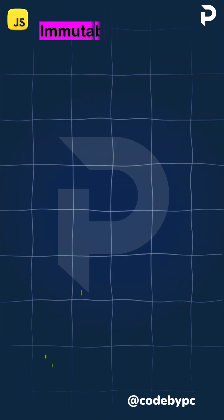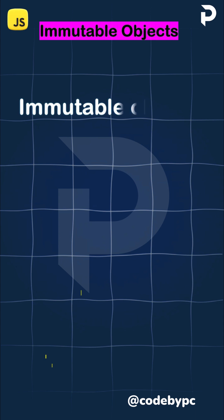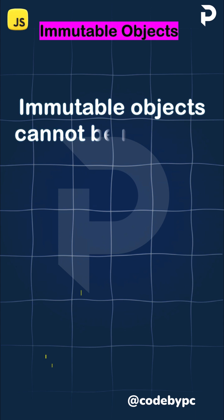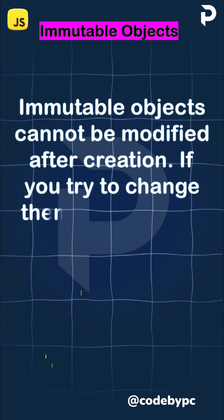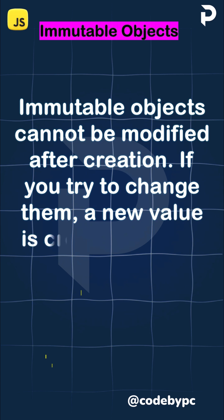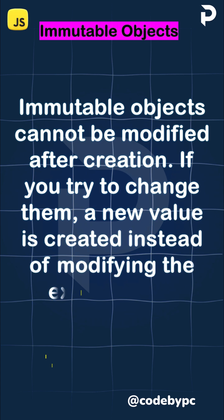Immutable objects cannot be modified after creation. If you try to change them, a new value is created instead of modifying the existing one.